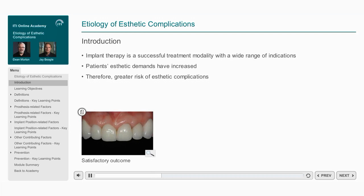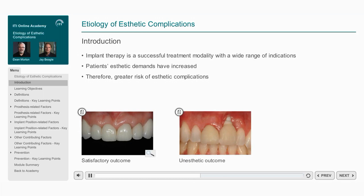In this clinical case, the implant-supported crown replacing the missing upper right central incisor has achieved a satisfactory result with good symmetry of both the peri-implant mucosal tissues and the prosthesis, when compared with the conventional prostheses on the surrounding teeth.